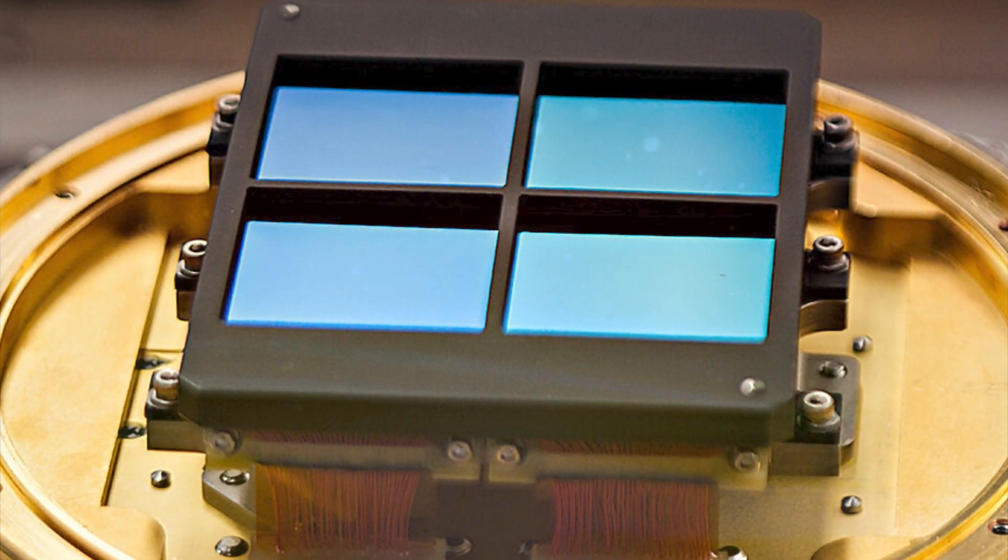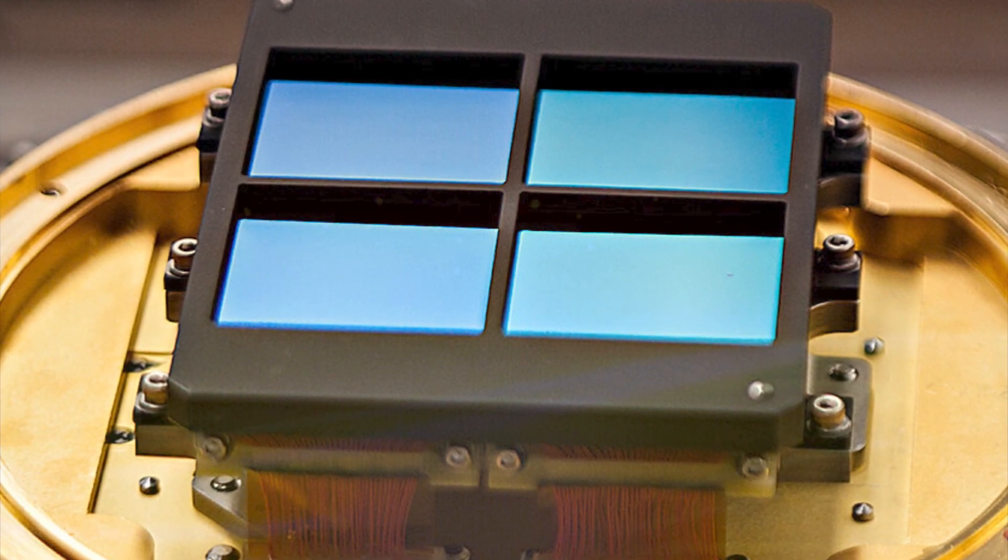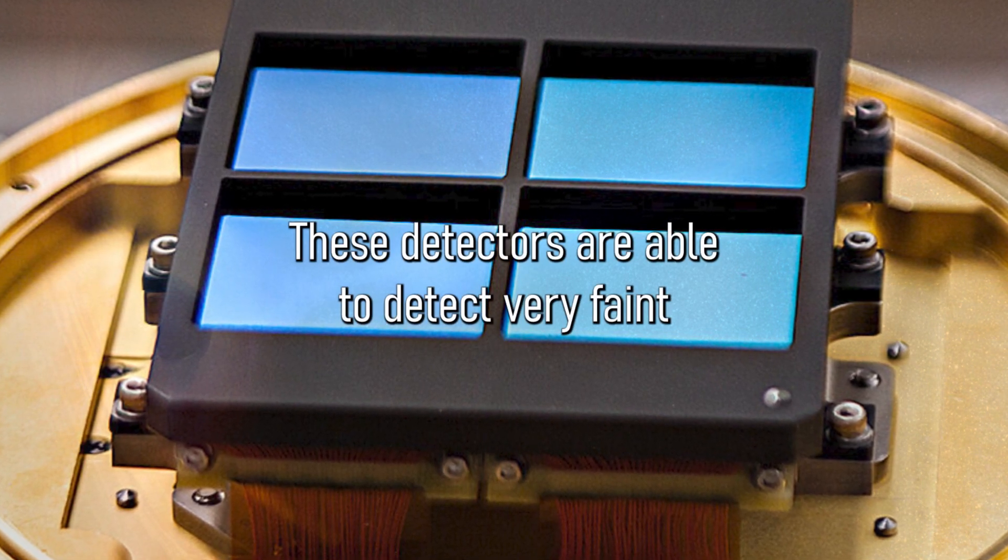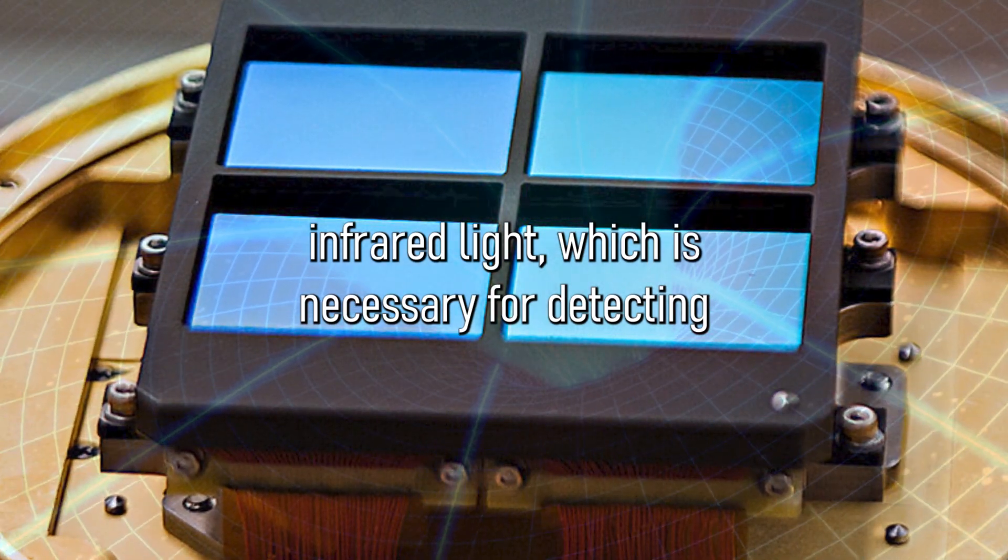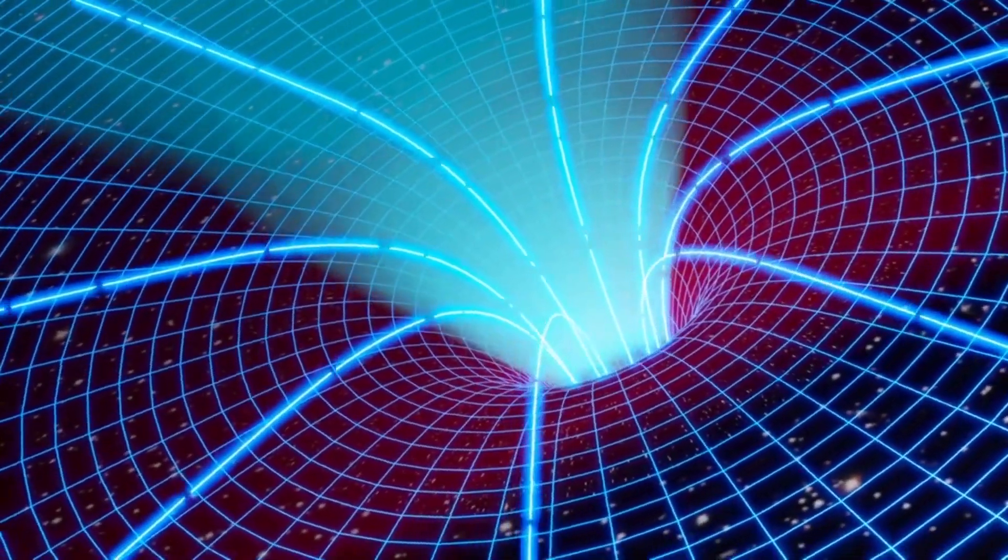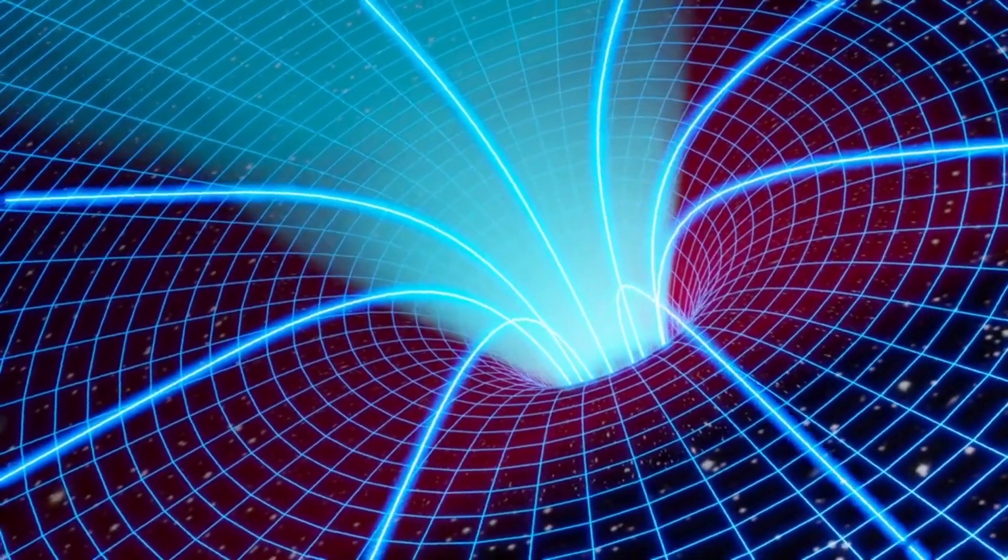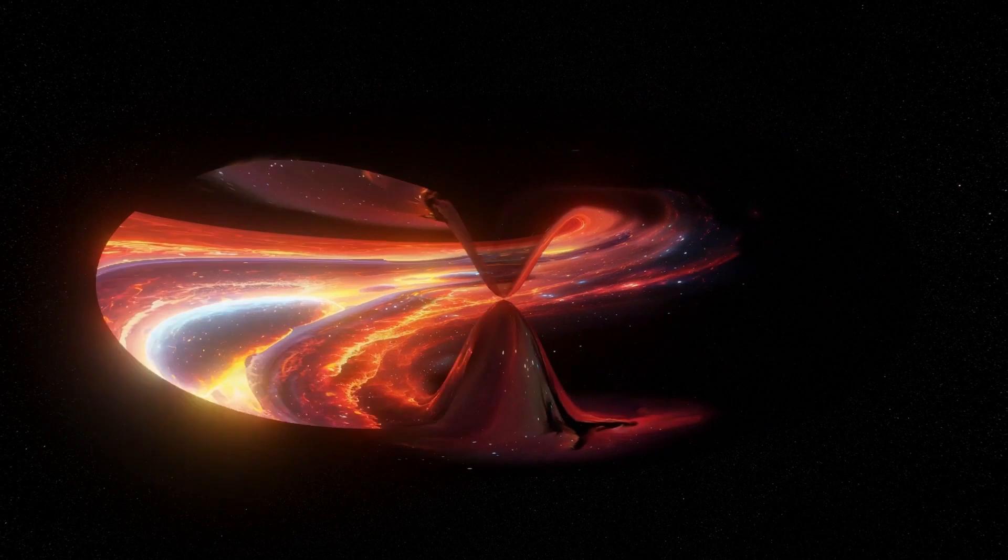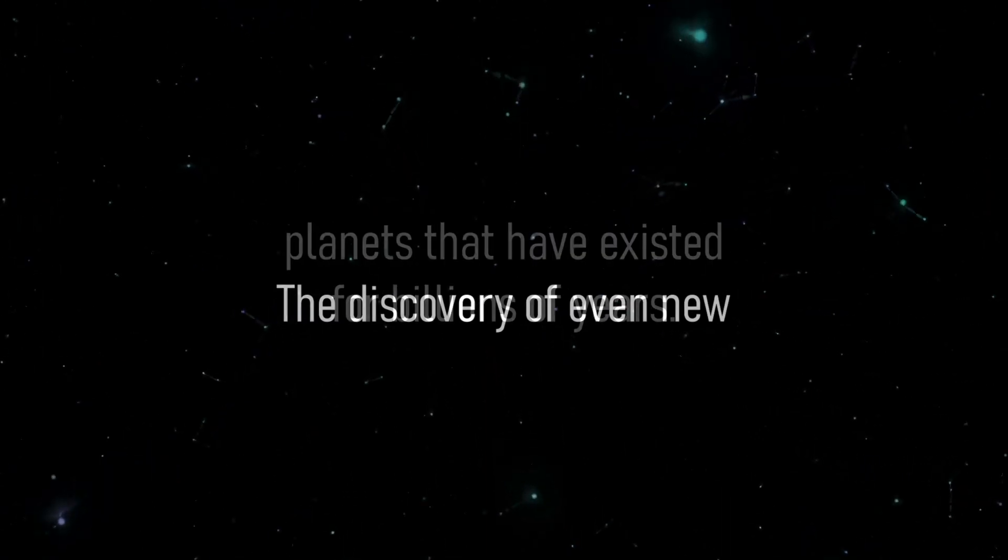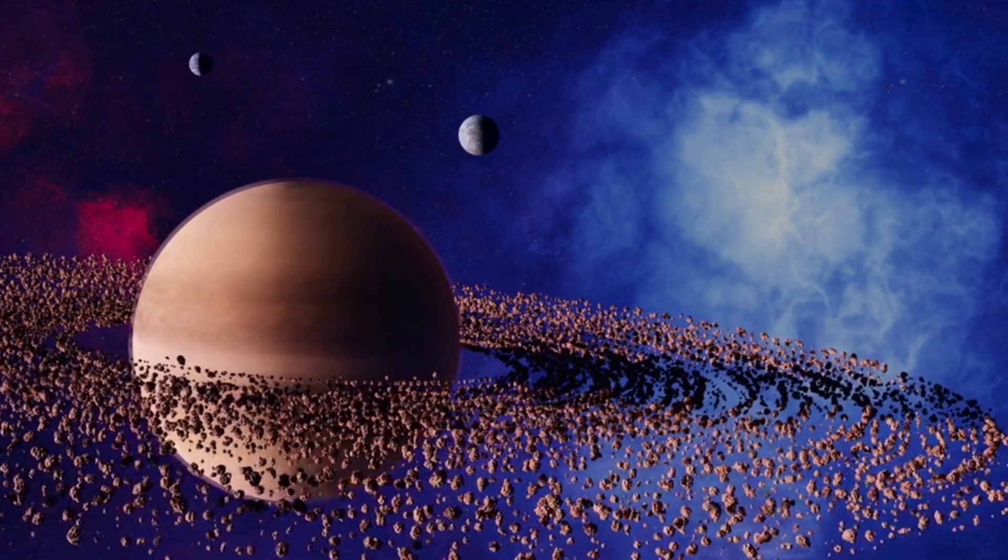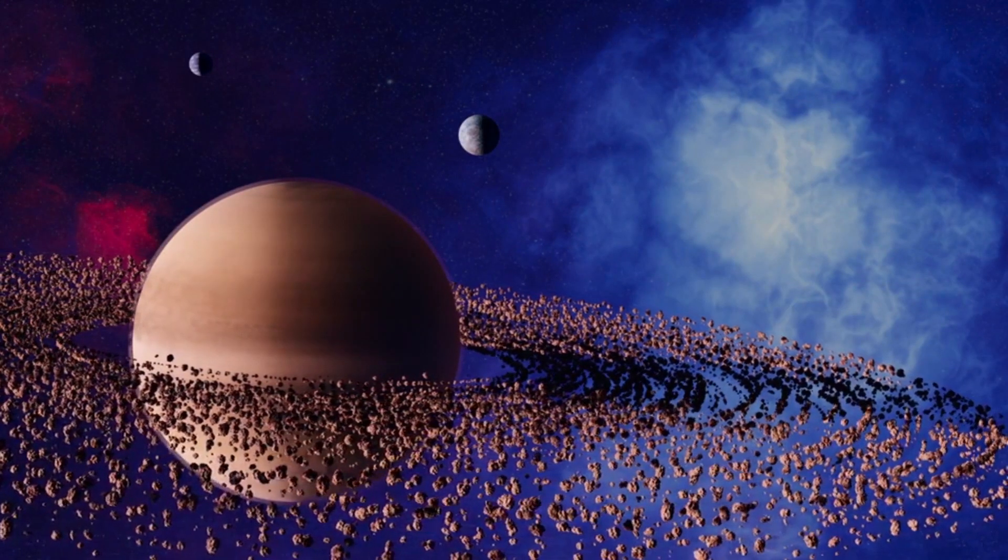The James Webb Telescope was able to detect this redshift because it has very sensitive infrared detectors. These detectors are able to detect very faint infrared light, which is necessary for detecting objects that are redshifted by a large factor. This discovery is just one of the many ways that the James Webb Telescope has changed our perspective on understanding the universe. The telescope's infrared capabilities are allowing us to see objects that were previously invisible, which includes the discovery of even new planets that have existed for billions of years. And these discoveries are providing us with new insights into the formation and evolution of the universe.